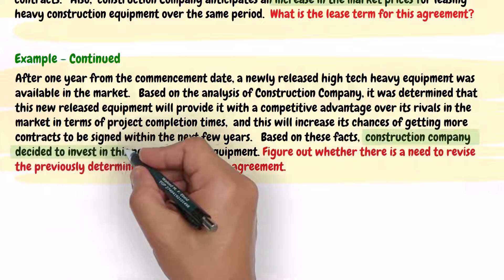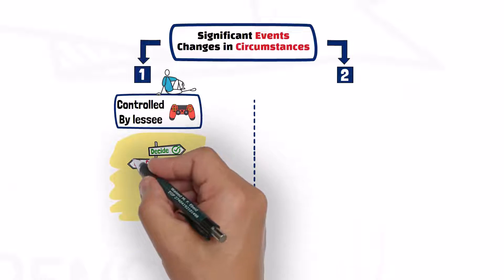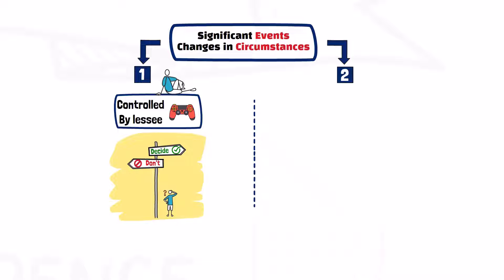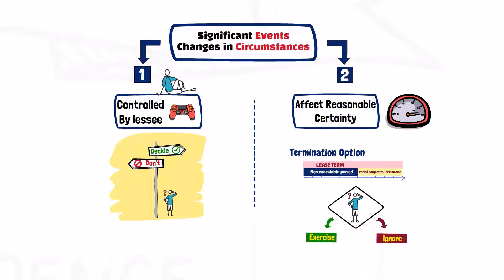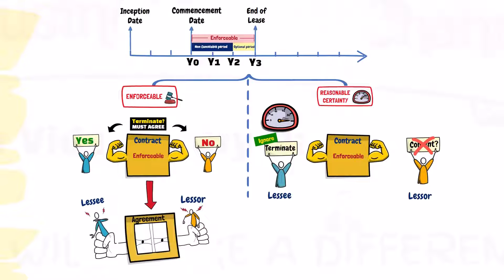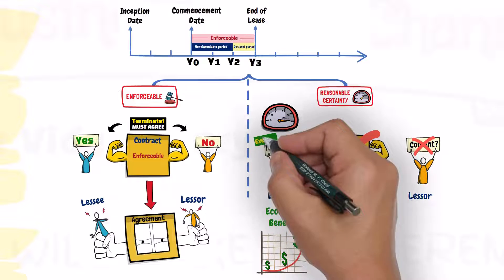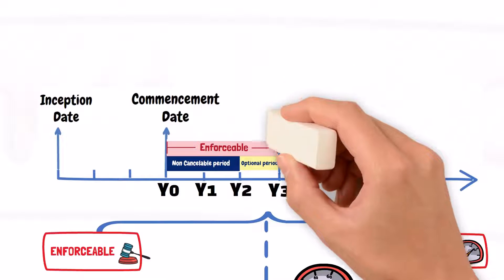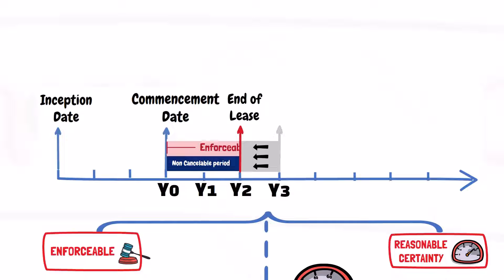The company decided to invest in the newly introduced high-tech equipment, and that is a significant business decision within the control of the lessee — meaning it is up to the lessee to choose whether to invest in that new equipment or not. Also, that business decision affects whether there is a reasonable certainty that the lessee will exercise or not exercise the lease termination option in the contract. The fact that the company decided to invest in that newly introduced equipment creates an economic incentive for the lessee to terminate the current contract for leasing the outdated equipment. So, it is reasonably certain that the lessee will exercise the lease termination option, and therefore the lease term should be revised to be two years instead of the previously determined three years.